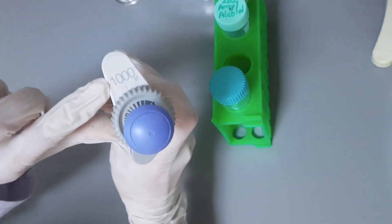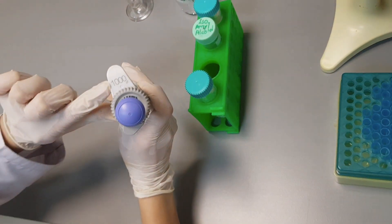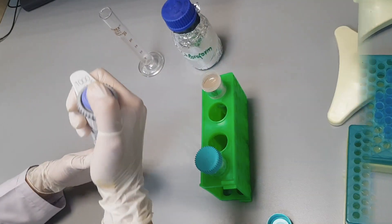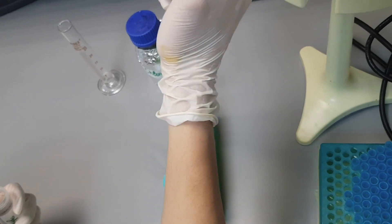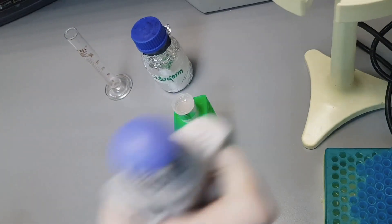Now measure 1 ml isoamyl alcohol by using a 1000 microliter pipet and pour it also in the falcon tube.